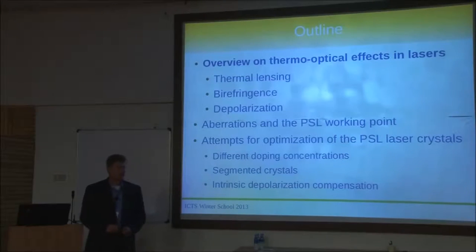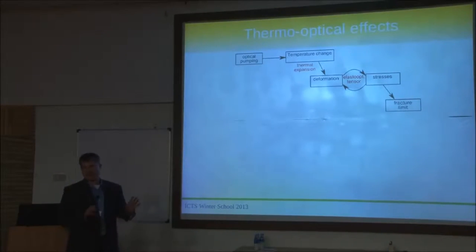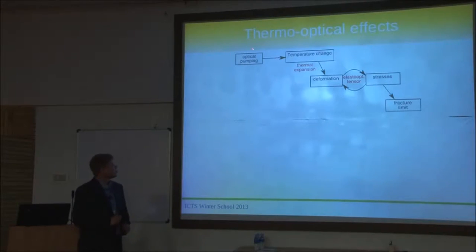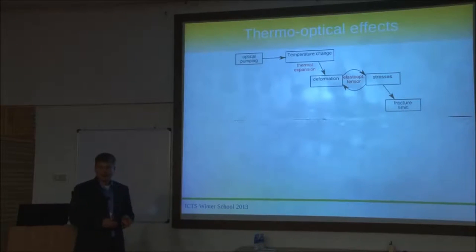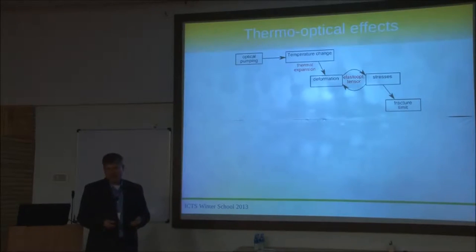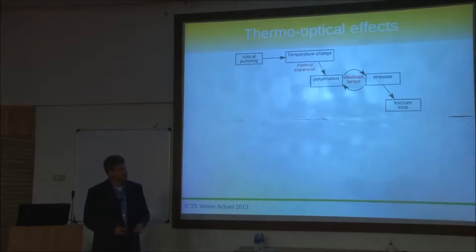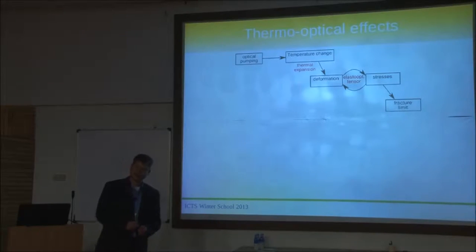Let's start with an overview on thermo-optical effects. We have some optical pumping — we put light from laser diodes into the crystals at 808 nanometers. The laser light is emitted at 1064 nanometers, so there's an energy gap in between and that gap creates heat. There's some decay from the upper laser level — that's called the quantum defect — which is converted into heat, and there may also be other paths which create additional heat.